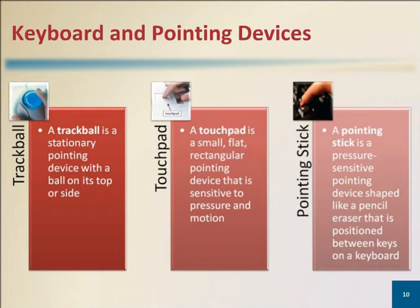A trackball often works better than a mouse for people with shoulder pain because it takes less overall movement to use. A touchpad is a small, flat, rectangular pointing device sensitive to pressure and motion. Touchpads are probably the most popular pointing device used with portable computers.